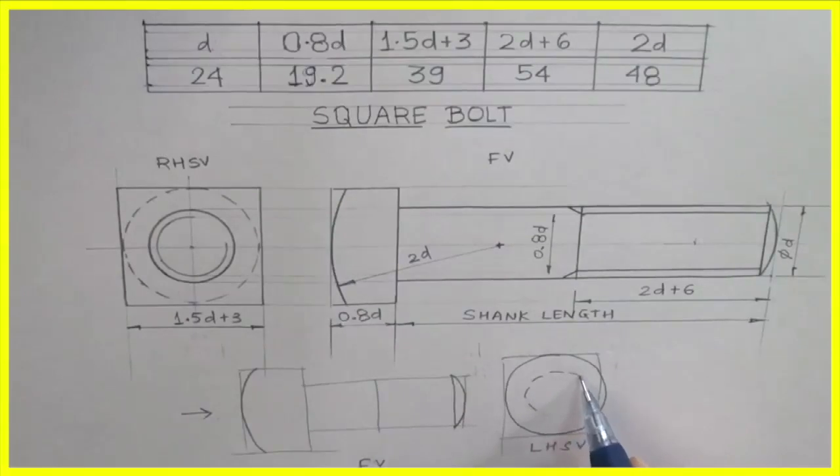See this. This is external threading so outer circle will be full and inner one will be 3/4. But it will be dotted because you can't see from the left-hand side. From right-hand side you can see. So this you need to remember.